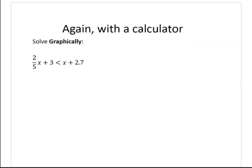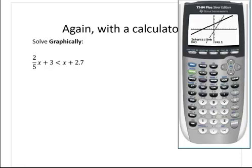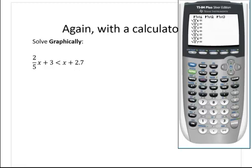Another example using the calculator. Here we wish to solve the inequality 2/5 x plus 3 is less than x plus 2.7. Let me bring up my calculator and the y equals screen — let me clear out the old stuff. My y1 will be 2/5 x plus 3. It's always a good idea to put fractional coefficients in parentheses. My y2 will be x plus 2.7. I'll move to the left of y2 and hit enter one time to make it a thick line.